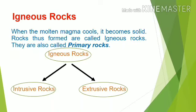In the next slide you can see about igneous rocks. When the molten magma cools, it becomes solid. Rocks thus formed are called igneous rocks. They are also called primary rocks. We can divide igneous rocks into two types: the first is intrusive rocks and the second is extrusive rocks.